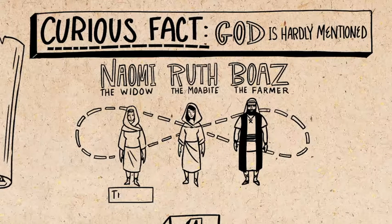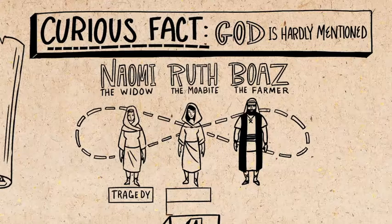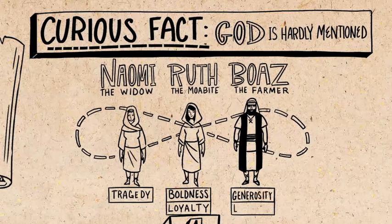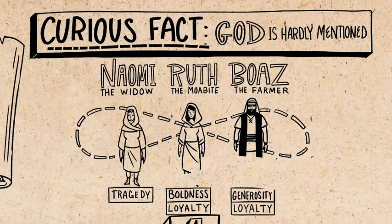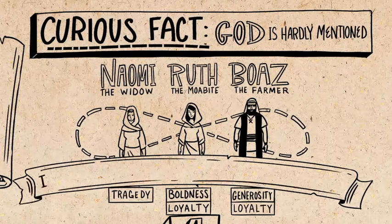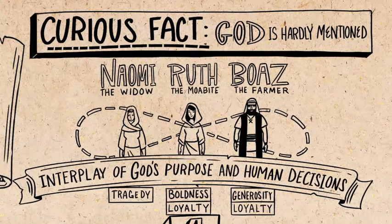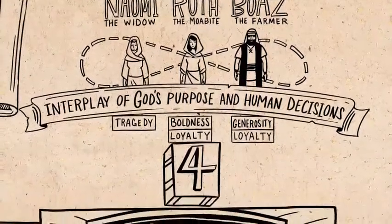God's providence is at work behind every scene of this story, weaving together the circumstances and choices of all these characters. Naomi's tragedy leads her to think that God is punishing her, but actually the whole story is about God's mission to restore her and her family. He's doing so through Ruth — through her boldness and loyalty, which brings healing to Naomi's life. But not without Boaz, a no-nonsense farmer full of generosity and loyalty. God uses his integrity combined with Ruth's boldness to save Naomi and her family. This story brilliantly explores the interplay of God's purposes and will with human decision and will. God weaves together the faithful obedience of his people to bring about his redemptive purposes in the world.